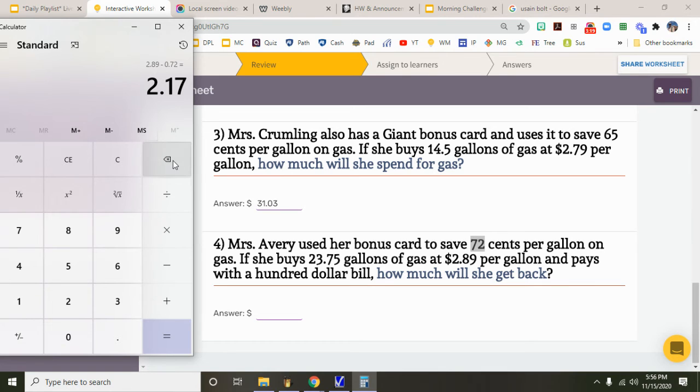She's going to spend $2.17 per gallon, and she buys 23.75 gallons, so she's gonna spend $51.54. Again, you're gonna round to the hundreds place, so underline that, draw an arrow to the 7. The 7 is five or higher, so you make this number a 4. So it's $51.53.